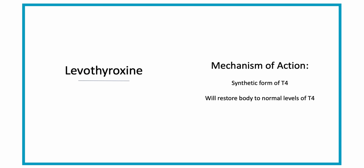The mechanism of action of levothyroxine is that it's a synthetic form of the normal hormone T4. In hypothyroidism, the body has low levels of T4. So this man-made synthetic form of T4 will restore those levels back to normal values, which will also restore all function over the body, including metabolism, gluconeogenesis, protein synthesis, cell growth, and development of the brain and central nervous system.